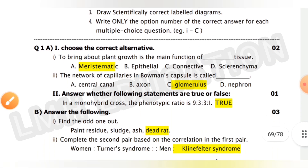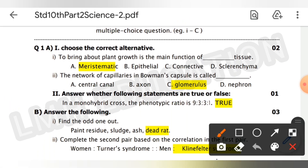The first question is: to bring about plant growth is the main function of — the answer is meristematic tissue. Second question: the network of capillaries in Bowman's capsule is called — the answer is glomerulus.